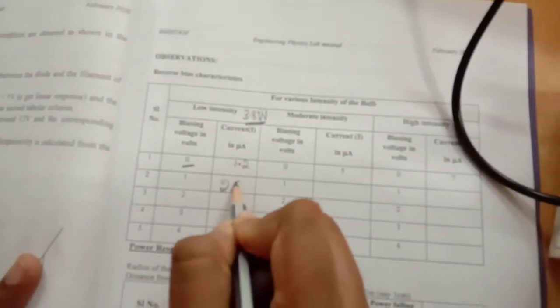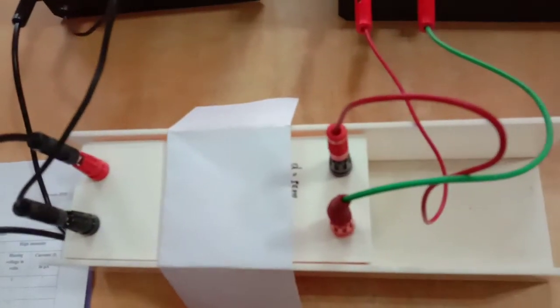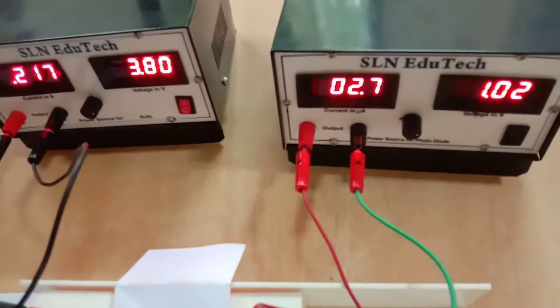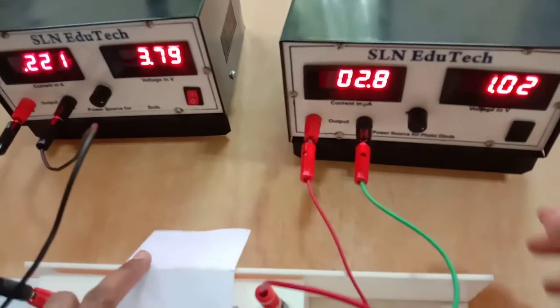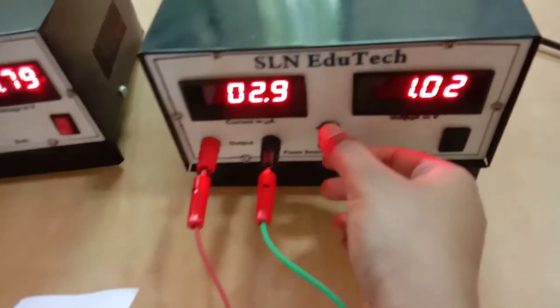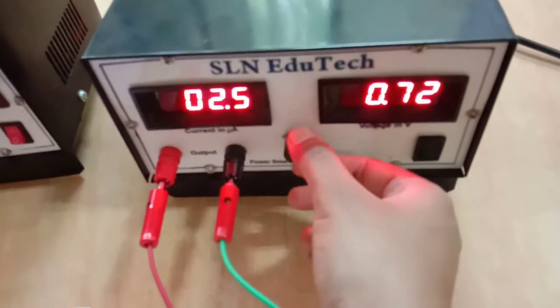Since we are working in microampere level, fluctuations will be there. So you have to prefer every time either the lower value or the higher value. Now what I do is I am going to change my biasing voltage to 2, from 1 volt to 2 volts.